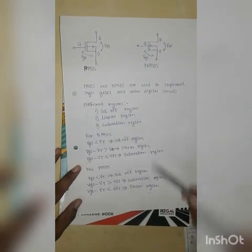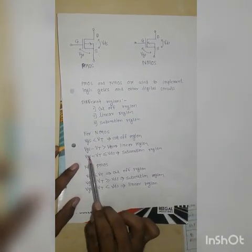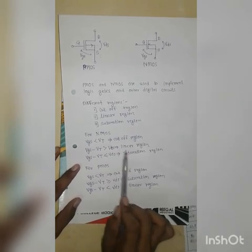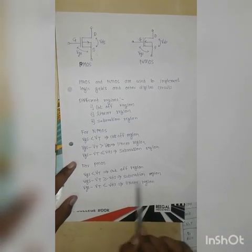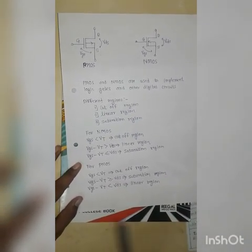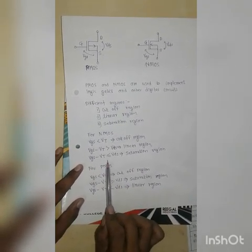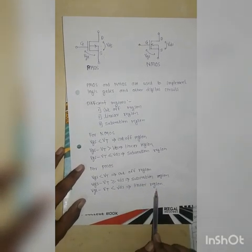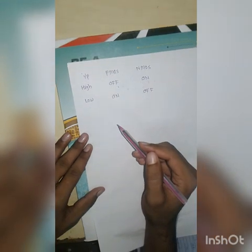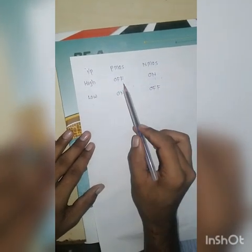The difference between the regions of these two transistors is: for NMOS, when VGS minus VT is greater than VDS, the transistor operates in the linear region, but the same condition for PMOS corresponds to the saturation region. Conversely, the saturation condition for NMOS corresponds to the linear region condition for PMOS.